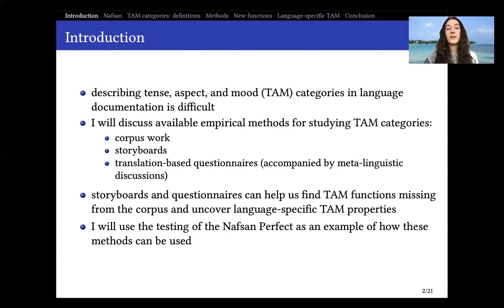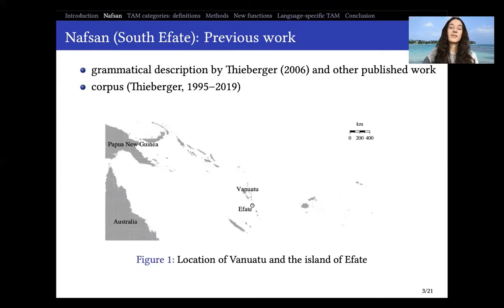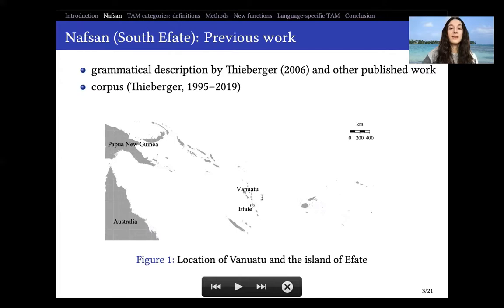I will use the Nafsan perfect as an example of this. Let us see where Nafsan is spoken. We have here the island of Efate in Vanuatu — that is where Nafsan is spoken. Nafsan has been previously described by Nick T. Berger in his grammatical description in 2006, but there is also some other published work.